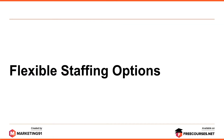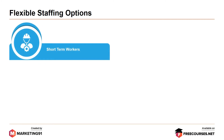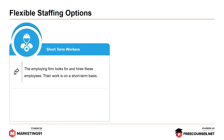Moving further, the first Flexible Staffing option is Short-term workers. The employing firm looks for and hires these employees, and their work is on a short-term basis. For example, retail outlets may hire more workers in and around festivals.